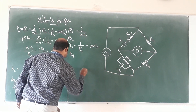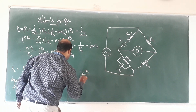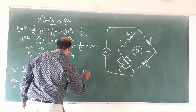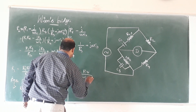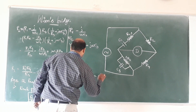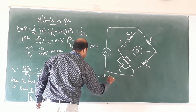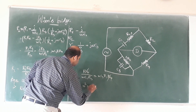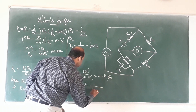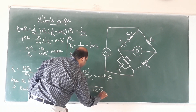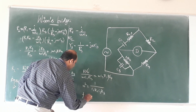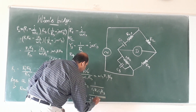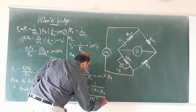From the imaginary components, equating gives: R4/(ωC1R3) = ωC3R1R4. Cancelling R4 from both sides: 1/(ωC1R3) = ωC3R1. Rearranging: ω² = 1/(C1R1C3R3). From this, the frequency F = 1/(2π√(R1C1R3C3)).